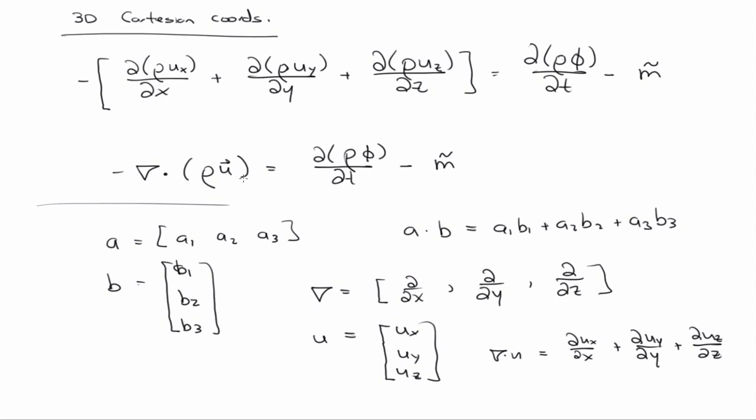You go up one order, so it'd be like a tensor or a matrix. If you take the divergence of something, you go down one order because it's like taking a dot product. The gradient of a scalar gives a vector. The divergence of a vector gives a scalar.